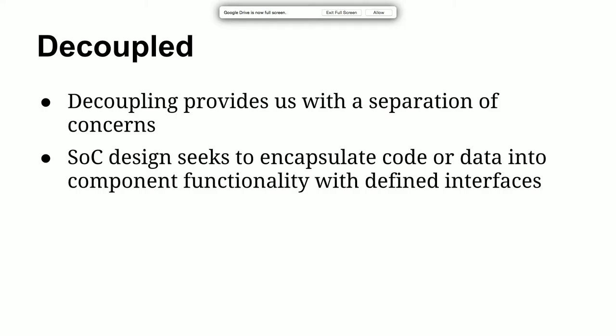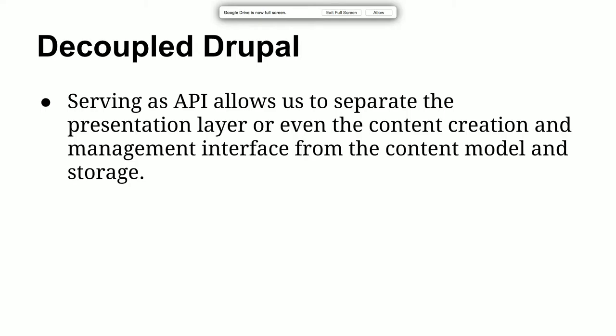Decoupled is actually a computer science term, not just a Drupal buzzword. Basically, decoupling provides the separation of concerns — separation of concern design seeks to encapsulate our code or data into component functionality with defined interfaces. You might be thinking Drupal modules sort of offer this, but it's kind of unidirectional with Drupal because everything is just for Drupal. Drupal can serve as an API to allow us to separate the presentation layer or content creation layer from the content model — potentially separating the Drupal theming layer from the content behind it. We can look at Drupal as a content modeling service and content management API.